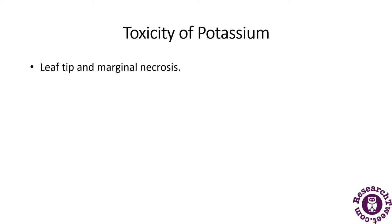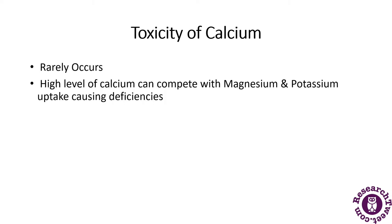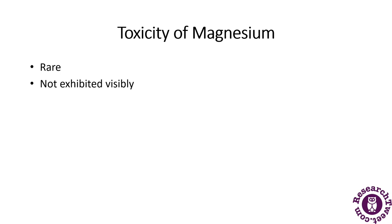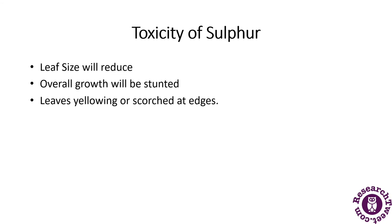Calcium toxicity rarely occurs, but a high level of calcium can compete with magnesium and potassium uptake, causing deficiencies in plants. Magnesium toxicity is very rare and is not even exhibited visibly.